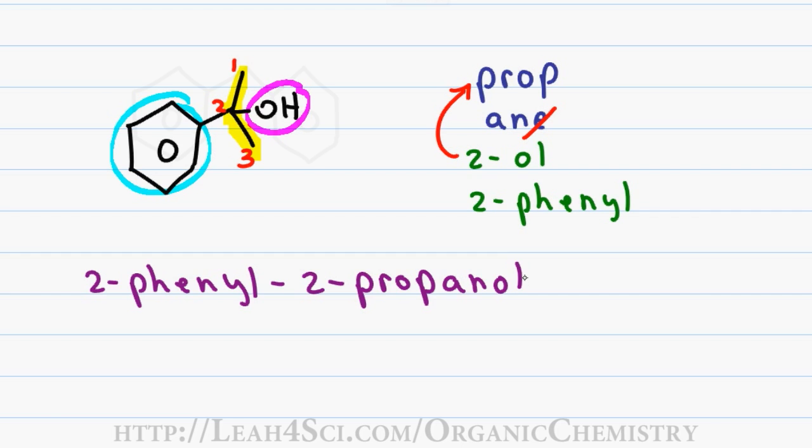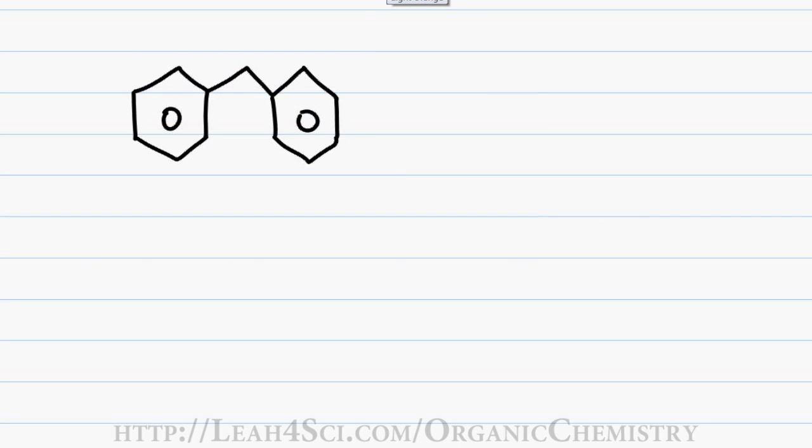We'll end part one with an interesting example. At first glance, this looks like a complicated molecule, however, if you look closer, you'll notice that your parent chain has one single carbon. This one carbon gives me a first name of meth and since I cannot have any double bonds on a single carbon chain, I get a last name of ain.